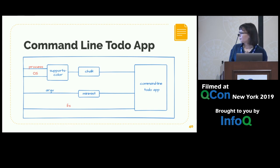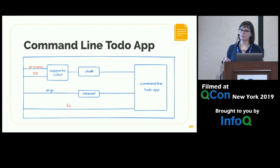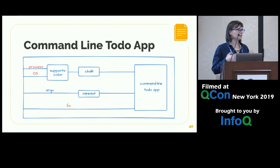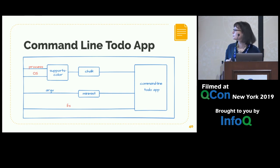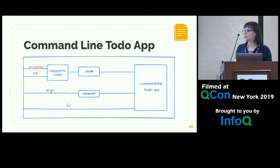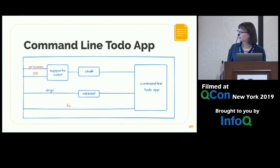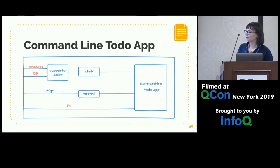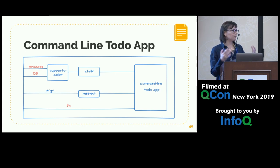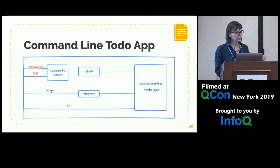If we analyze the authority, things get interesting. Our simple to-do app needs FS because it's saving to and reading from a file. Minimist is pretty much a pure function — it doesn't need a lot of authority. Chalk, on the other hand, does something really interesting. It uses a package called supports-color, which needs process and OS. Process is a global variable provided by Node. OS is one of the built-in Node modules. And these are both a little dangerous.